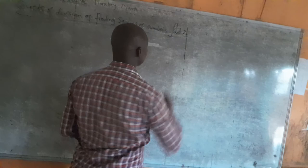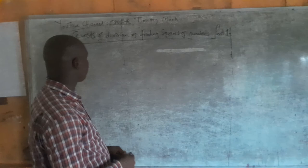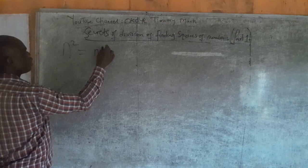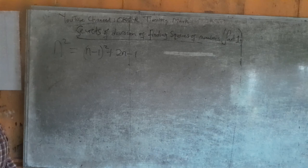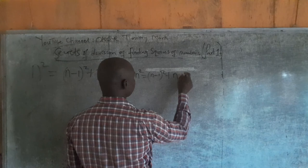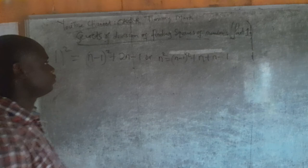Method 1 for finding the squares of numbers. I can show you part 2 in my next video. Now, by my discovery, I found out that n² = (n-1)² + 2n - 1. I found out that n² = (n-1)² + n + (n-1).